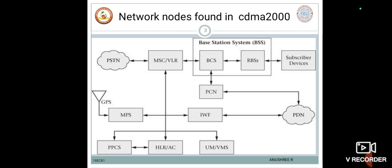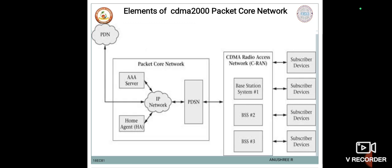In the packet core network of CDMA 2000, the PCN provides a standard interface for wireless packet-switched data service between the CDMA Radio Access Network CRAN and the public data network. The PCN provides the necessary links to various IP networks to and from the CRAN. The PCN typically consists of three main hardware nodes: the Authentication, Authorization and Accounting server; the Home Agent; and the Packet Data Serving Node.